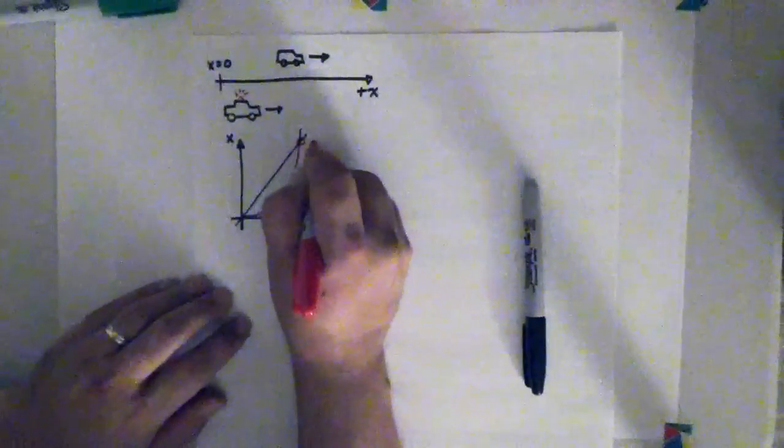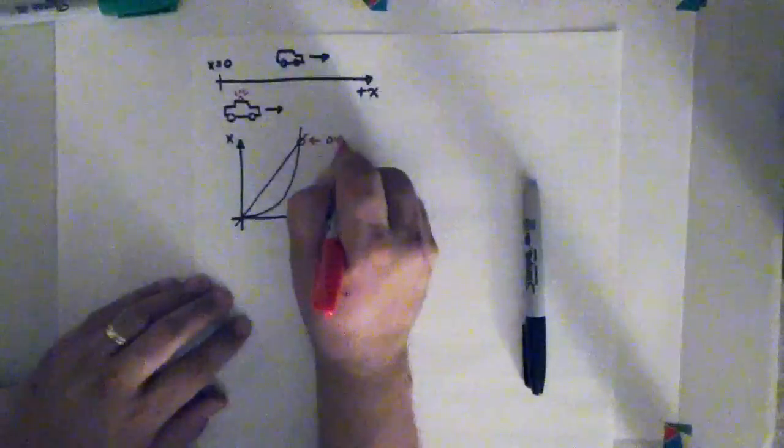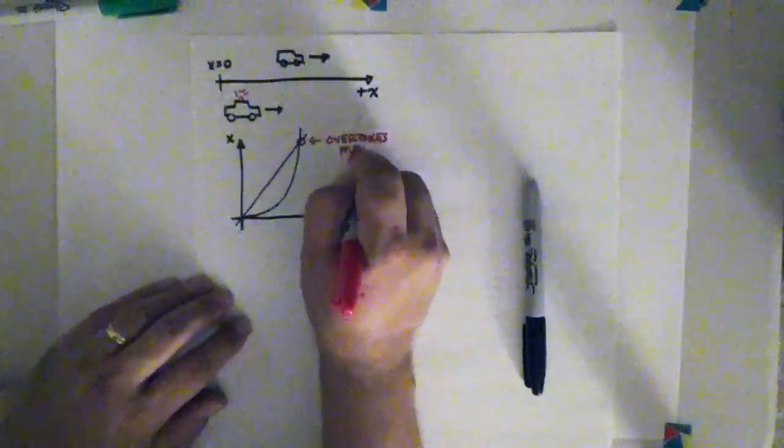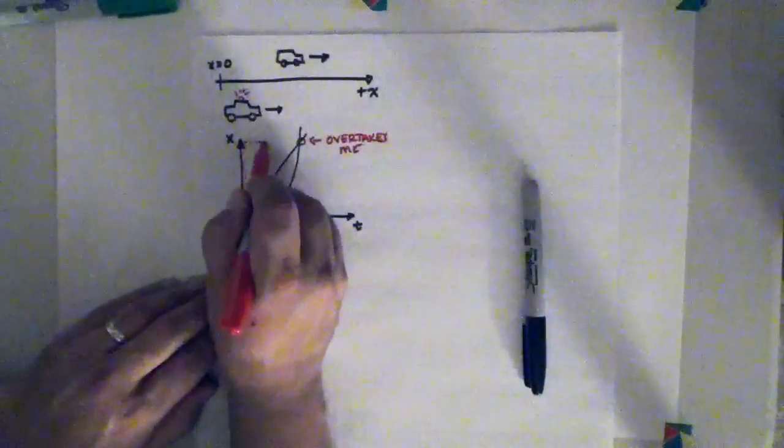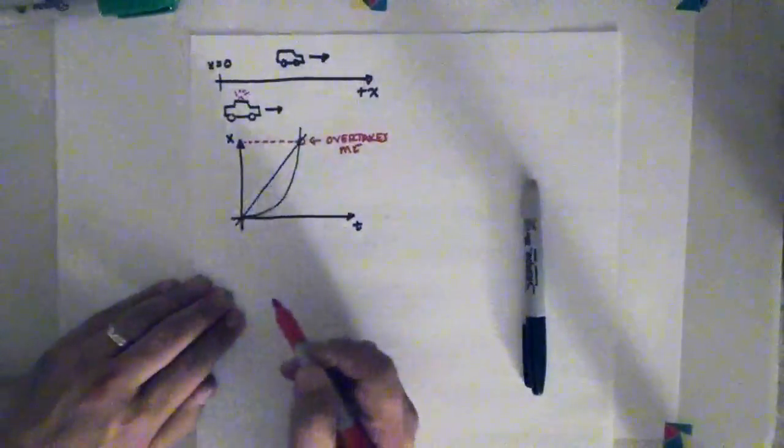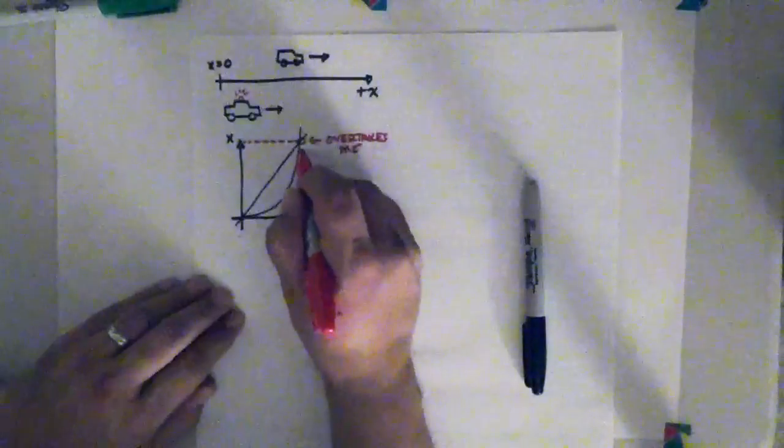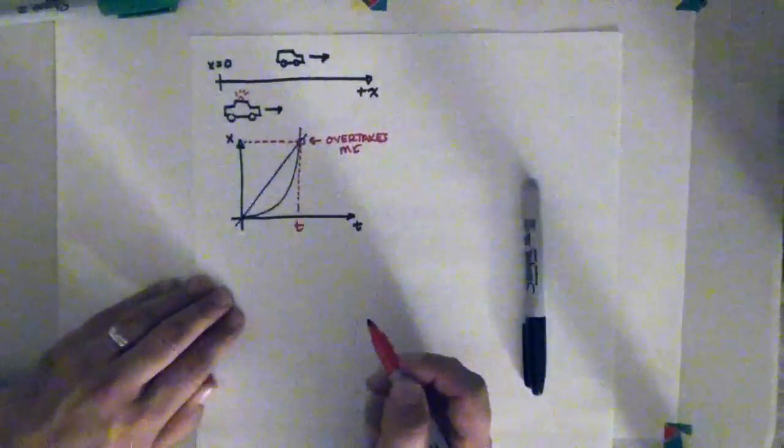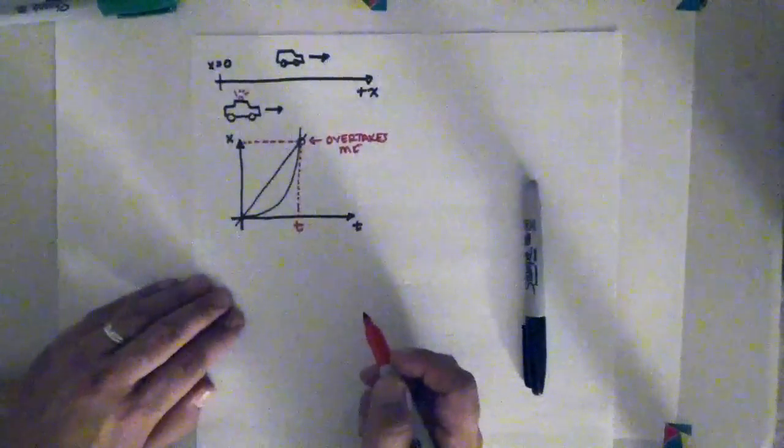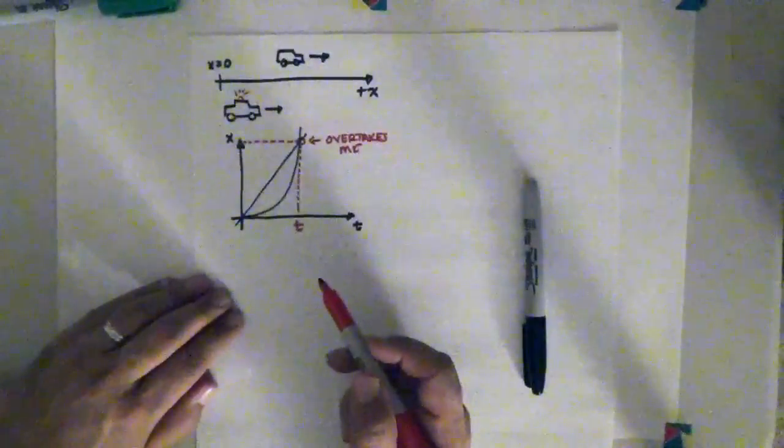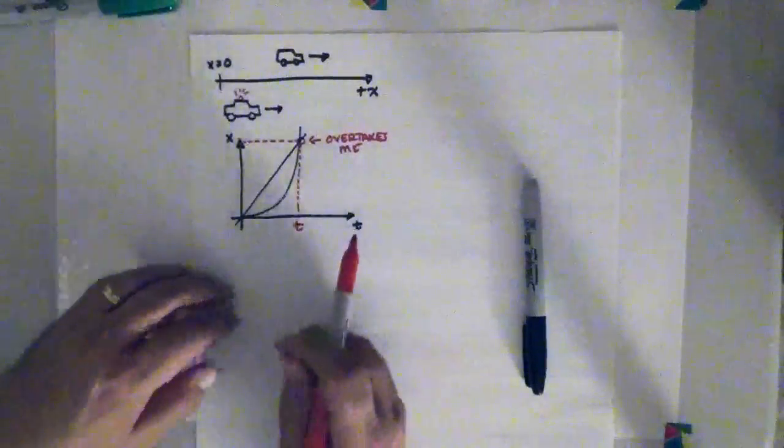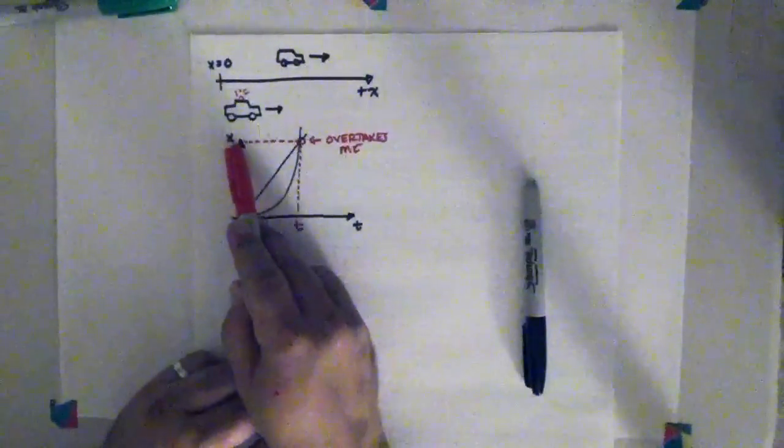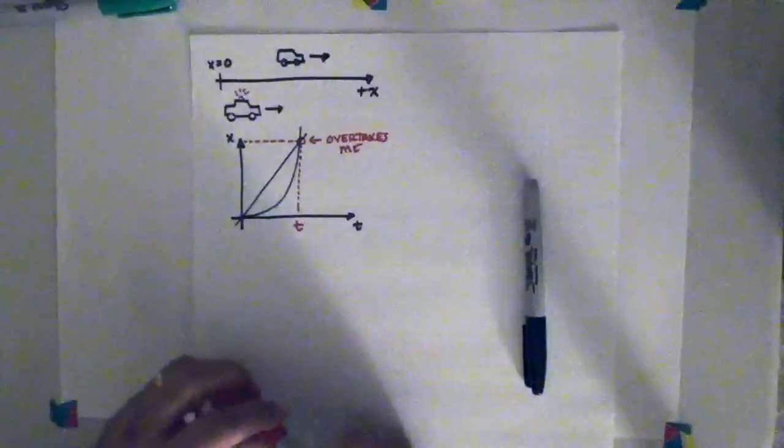And so, what the problem asks me to find is it asks me to find what is the position at the moment that she overtakes me. Well, she overtakes me at that point. At that point, we both have the same position, and at that point, the same time has elapsed in the problem for both of us. And that will be important when we set up our kinematic table and our kinematic equations. That's why I like to draw the graph, first of all, because it makes it very obvious that both the final position and the final time are the same for both of us.